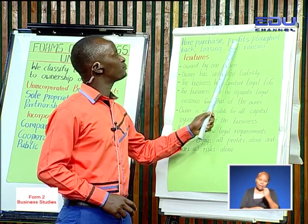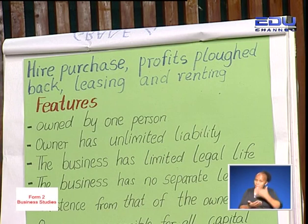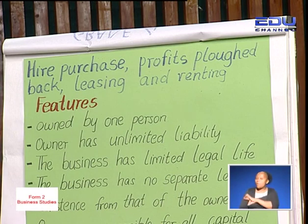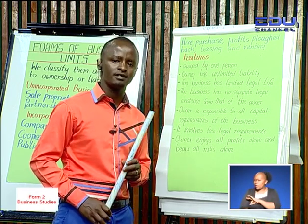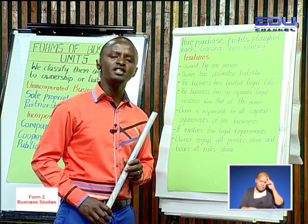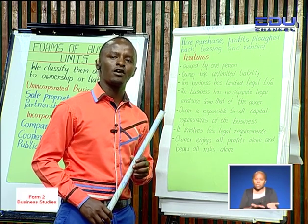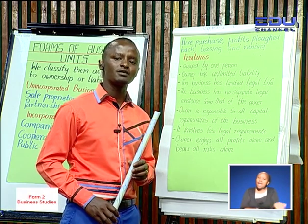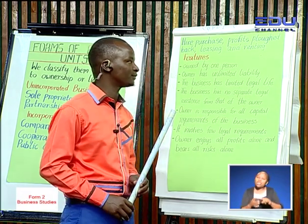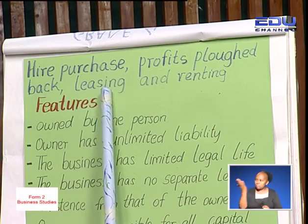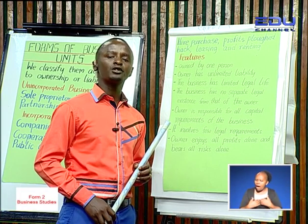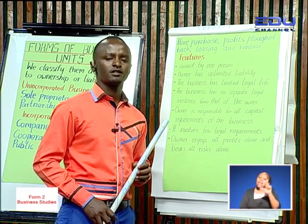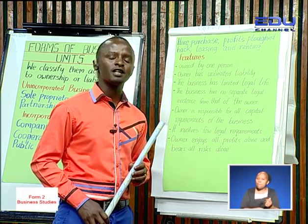The next source of capital is profits plowed back. In Form 1 we said the reward for an entrepreneur is profits. Sometimes the sole proprietor may choose, instead of spending this profit on personal needs, to reinvest that profit back into the business — we call that profits plowed back, which becomes a source of capital for the business. The last source of capital is leasing and renting: a sole proprietor who owns some property may lease or rent it to another person and use that money to start a business. That becomes a source of capital.